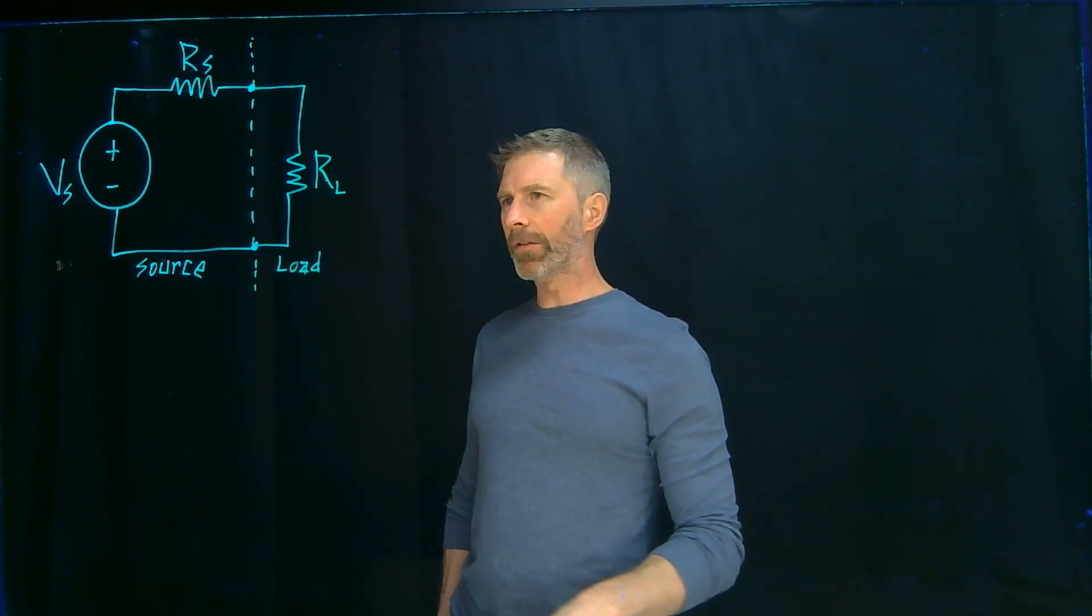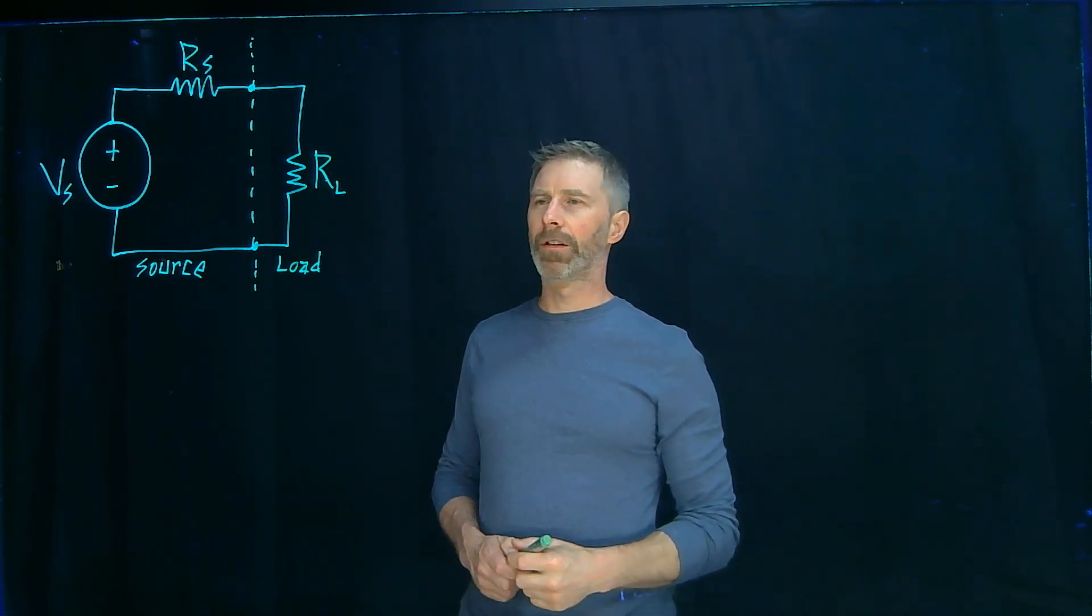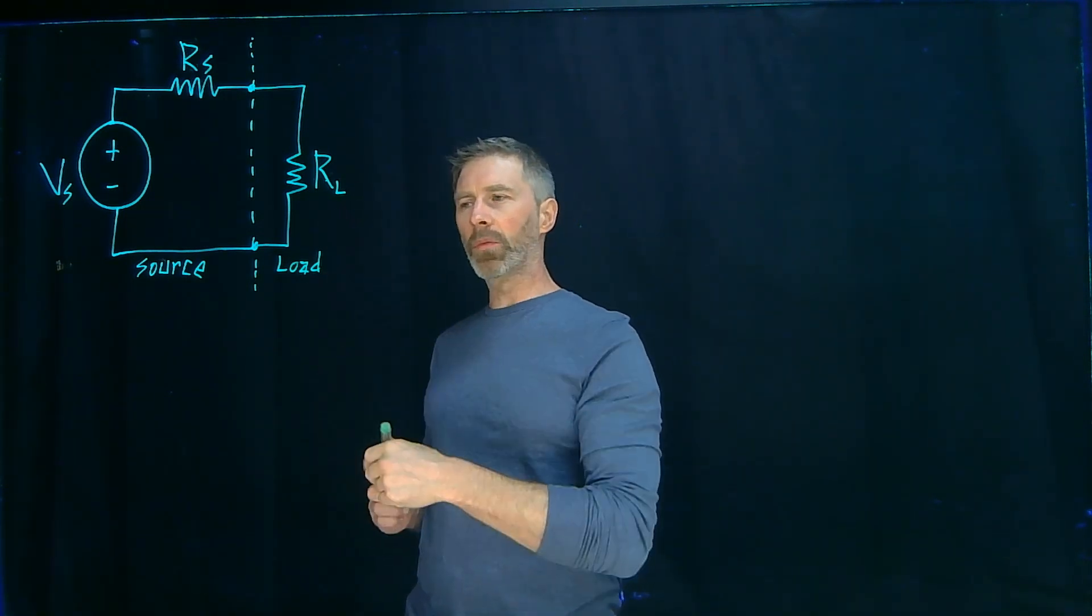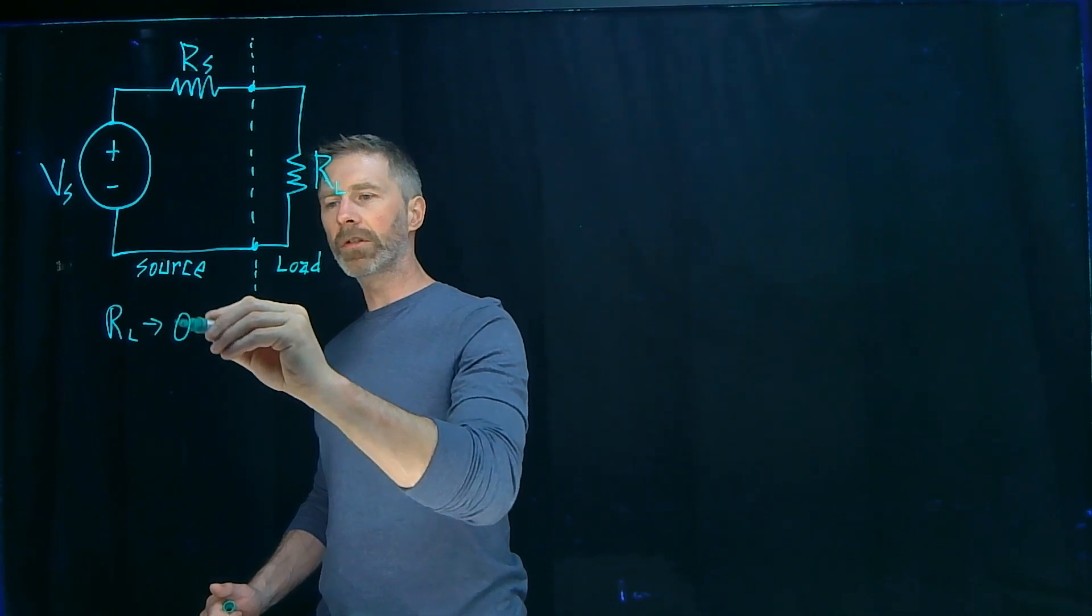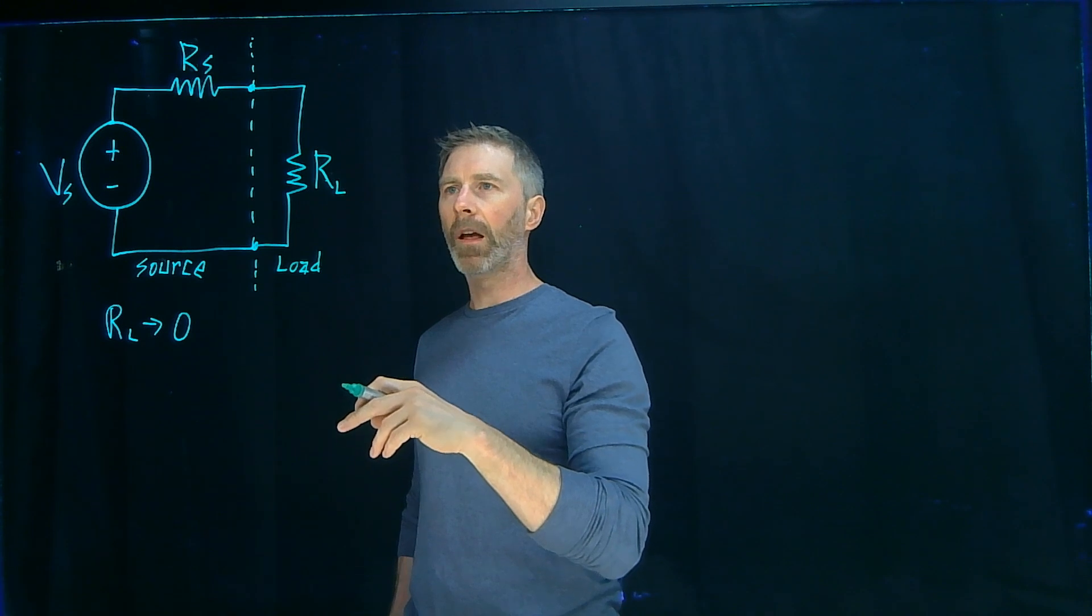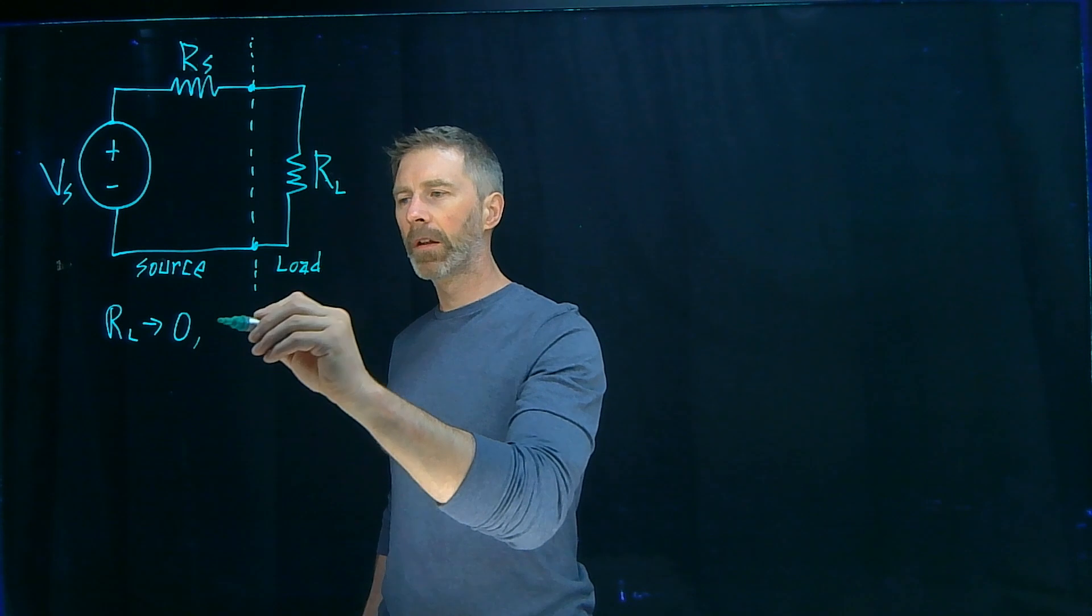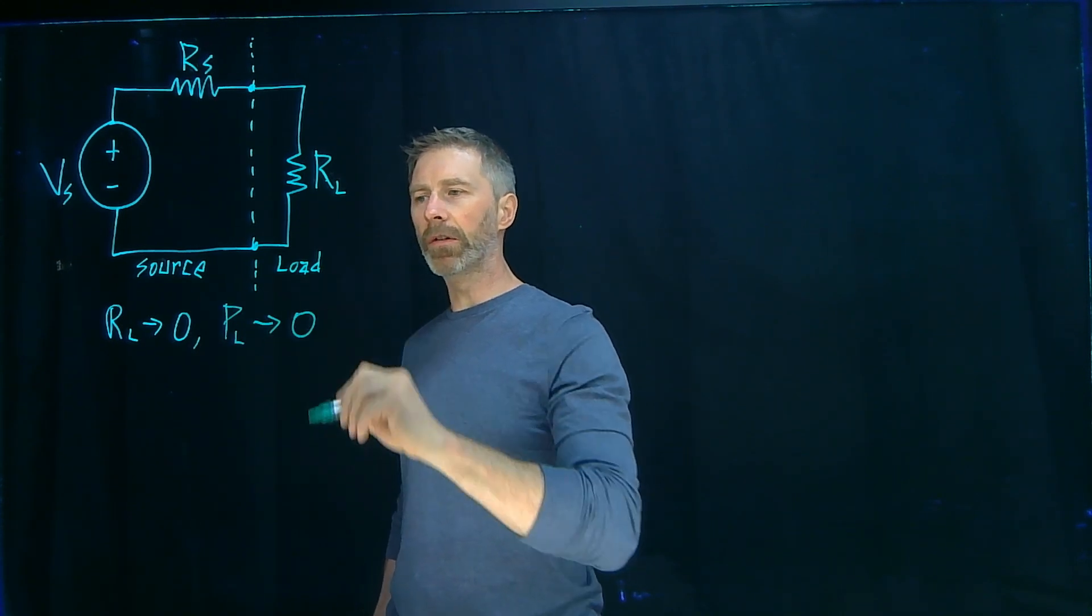Now, to get an intuitive understanding of where that value needs to fall, somewhere between zero and infinity, we can look at the case where that load resistor is zero. So if that load resistor is zero, that becomes a short. And if you have a short, there's going to be no voltage across it, no power dissipated by it. So the power dissipated by the load in that case is also going to go to zero.